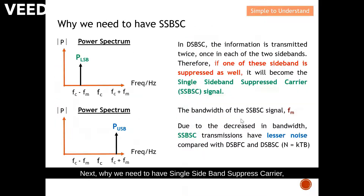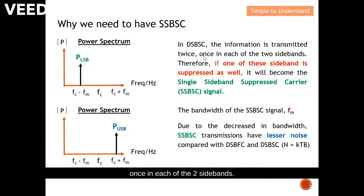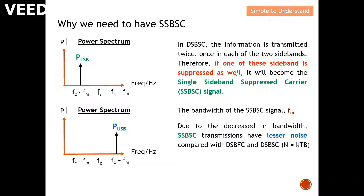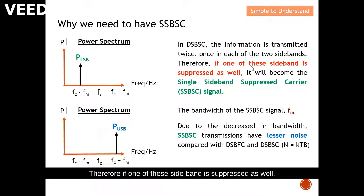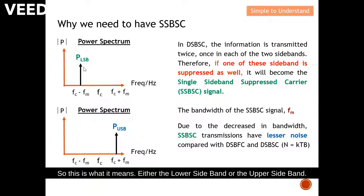Next, why do we need Single Sideband Suppressed Carrier? In DSB-SC, the information is translated twice — once in each of the two sidebands. This means we send the signal twice: one at the lower sideband and another at the upper sideband. Therefore, if one of these sidebands is suppressed as well, it becomes the Single Sideband Suppressed Carrier signal.